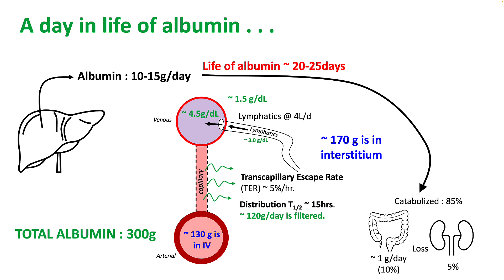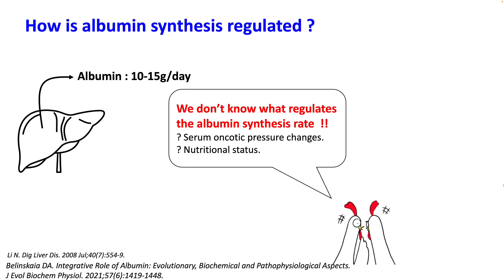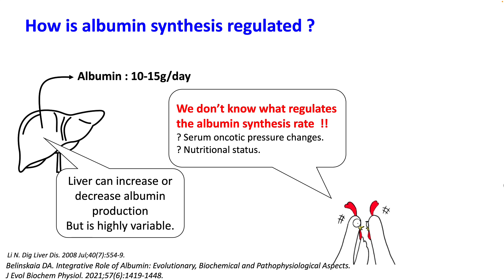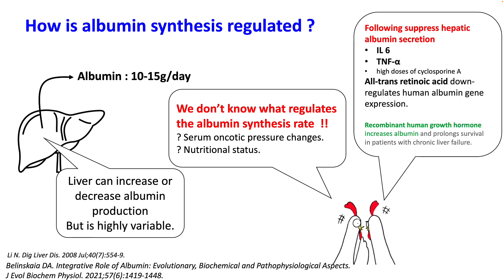We do not currently know what regulates the albumin synthesis rate. There is some thought that there might be receptors that can sense serum oncotic pressure changes or the nutritional status of a patient. The liver can certainly increase or decrease albumin production, but it is highly variable. Molecules like interleukin-6 and TNF-alpha affect it. All-trans retinoic acid also downregulates human albumin gene expression, while recombinant human growth hormone can increase albumin levels.